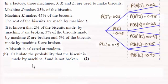Hi there. Now this next question we're told that a biscuit is selected at random and we're asked to calculate the probability that a biscuit is made by machine J and is not broken.